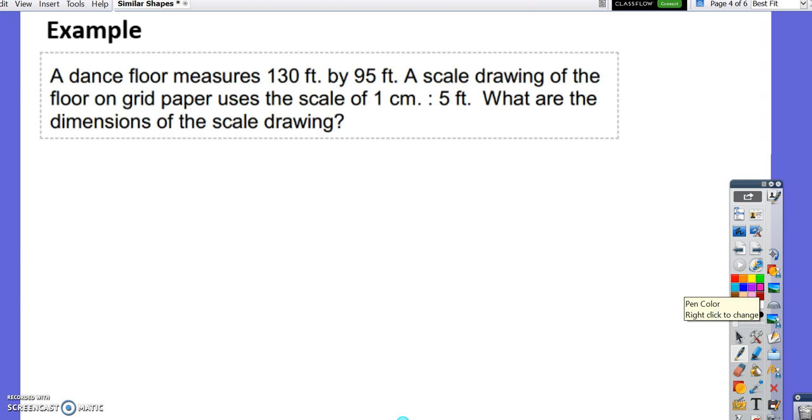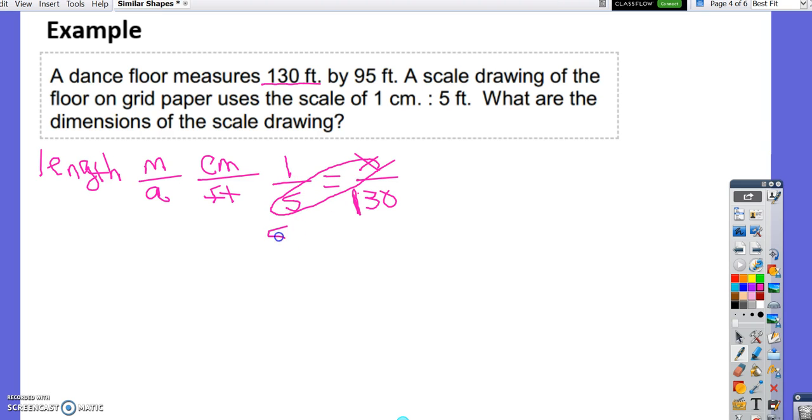A dance floor measures 130 feet by 95 feet. A scale drawing of the floor on grid paper uses the scale 1 centimeter to 5 feet. What are the dimensions of the scale drawing? So we're going to need to find the length and the width. We have model over actual. Our dimensions are centimeters to feet. Our scale factor is 1 centimeter for 5 feet. We are trying to find the dimensions of the scale drawing. So we have x over 130. Our length is feet. So we know that the 130 goes in the denominator. Then we solve our proportion. Cross products, 5x. 130 times 1 is 130. Divide both sides by 5. 130 divided by 5 gives you 26 centimeters.